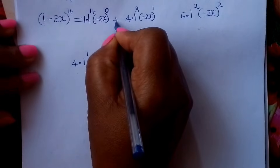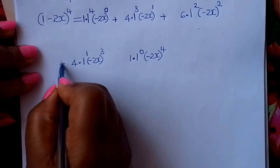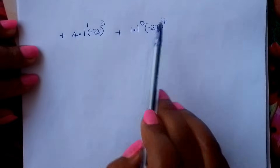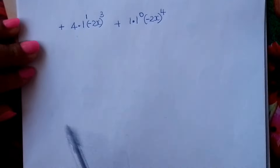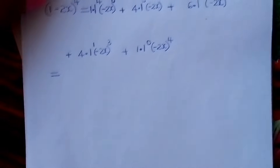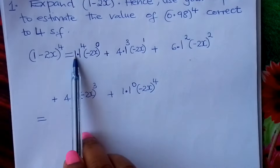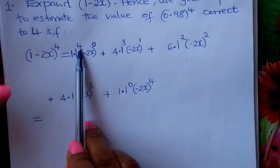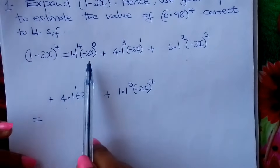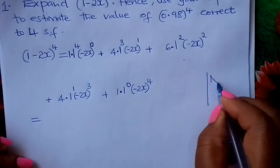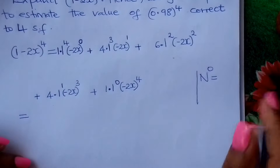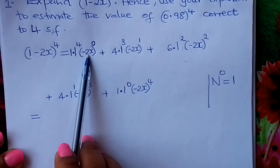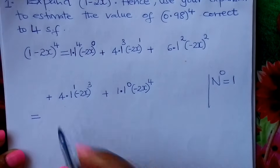The next thing is to add your terms — that plus that plus that, giving us 5 terms. Then you simplify each term. The first term is 1 times 1 raised to 4 times (negative 2x) raised to 0. Since 1 raised to any power is 1, and any number raised to 0 is 1, this gives us 1 times 1 times 1, which equals 1.